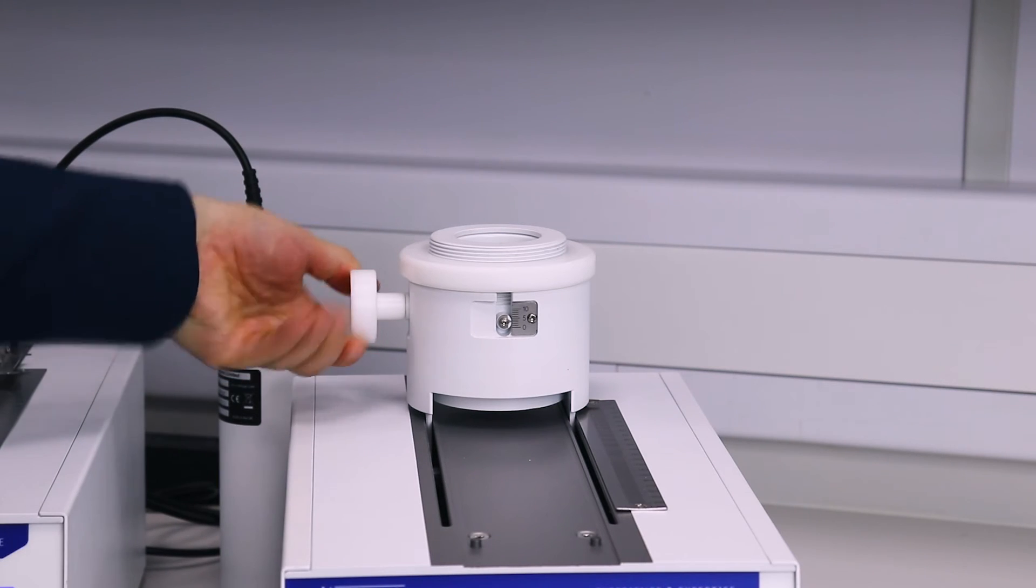The detector sits in an easily adjustable collimator and is driven by a very smooth motor where it collects data across the length of the TLC strip.